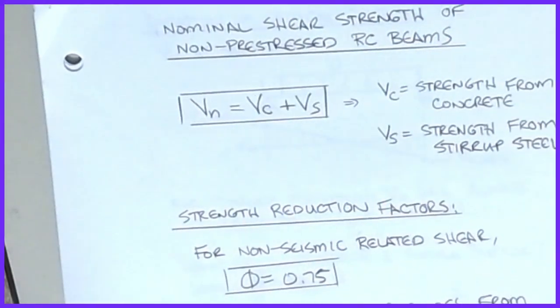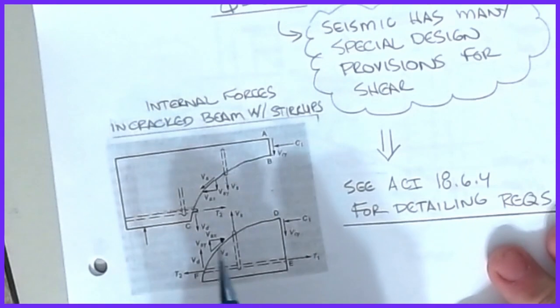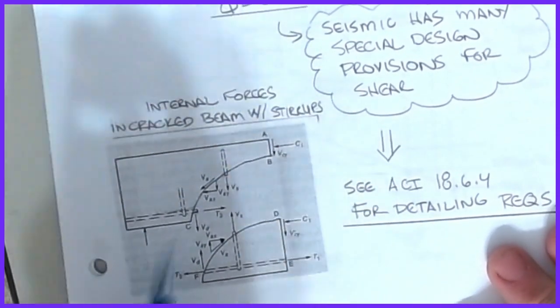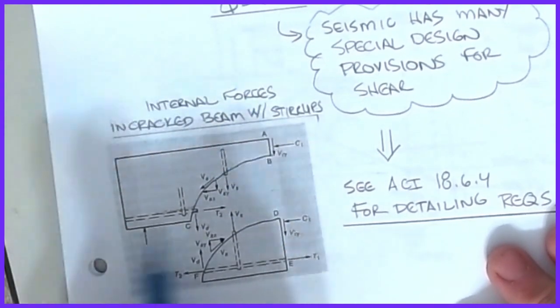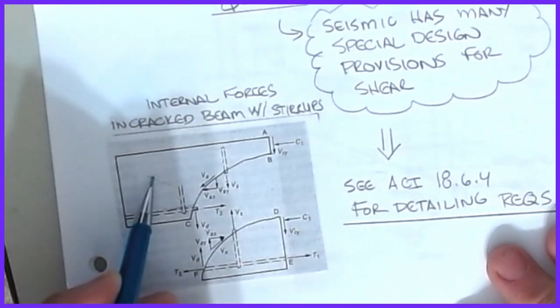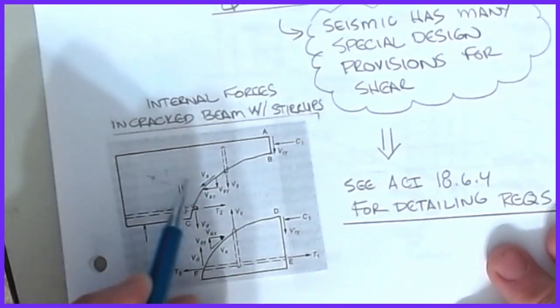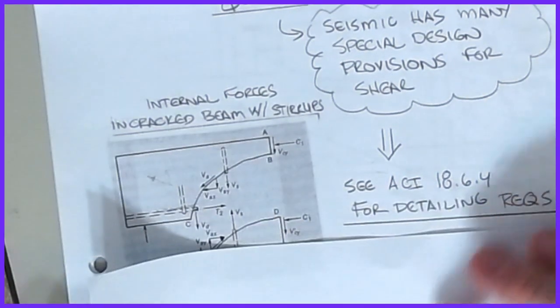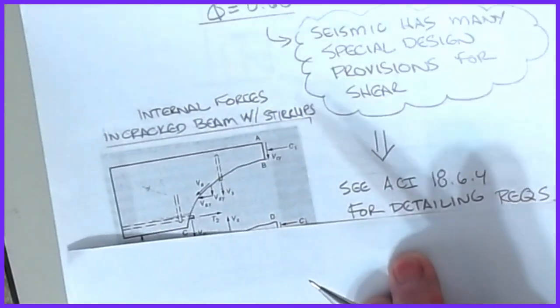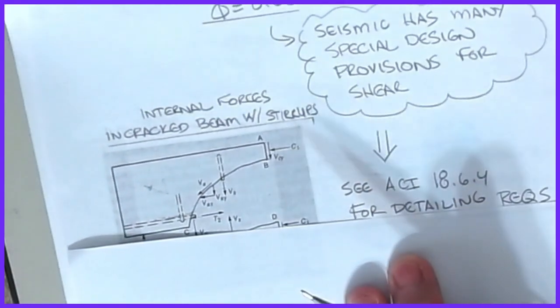Pre-stressed beams gain extra shear capacity because draped strands have a vertical component that directly assists shear resistance — an advantage of pre-stressing. However, for our study of ACI for reinforced concrete, we deal only with the concrete contribution Vc and the stirrup steel Vs.